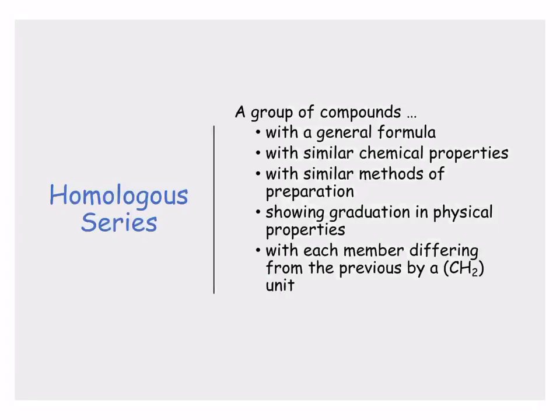And with each member differing from the previous by a CH2 unit. We've discussed this already. As we go from butane to pentane, we add an extra carbon. And for every extra carbon we add, we add two hydrogens.